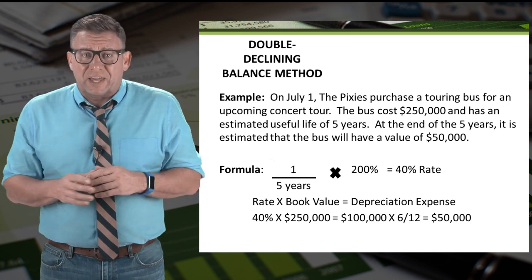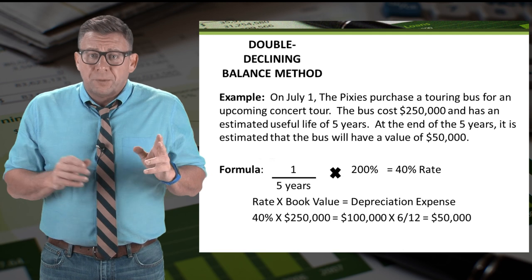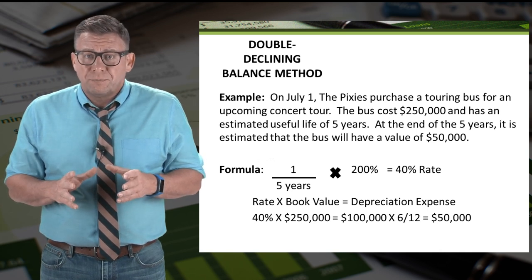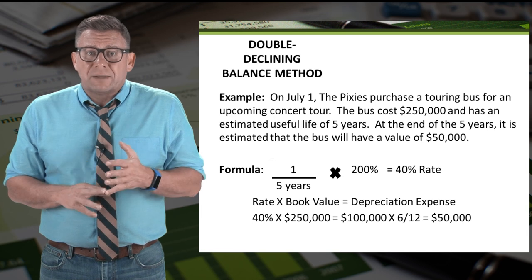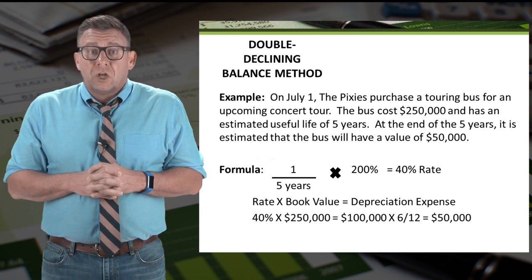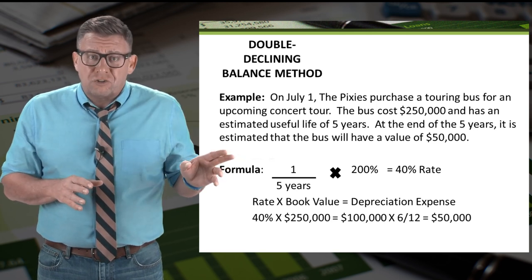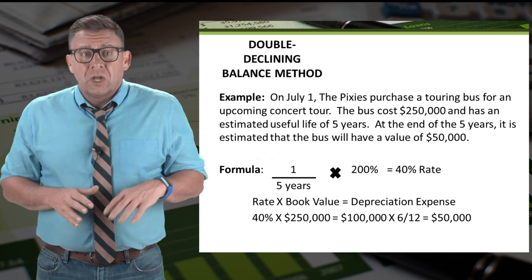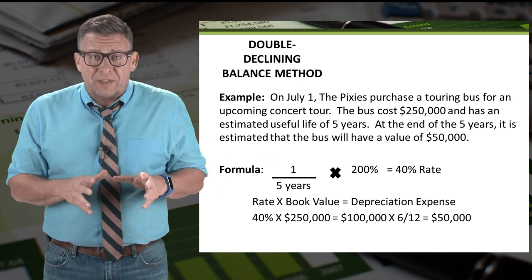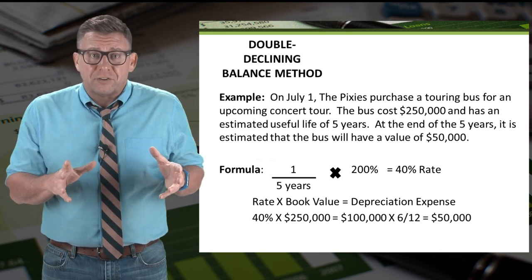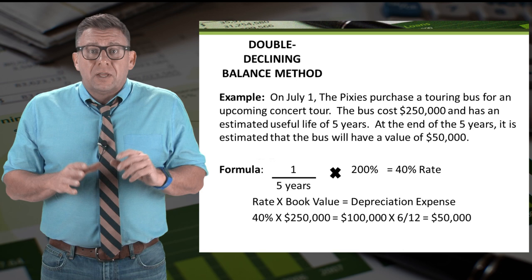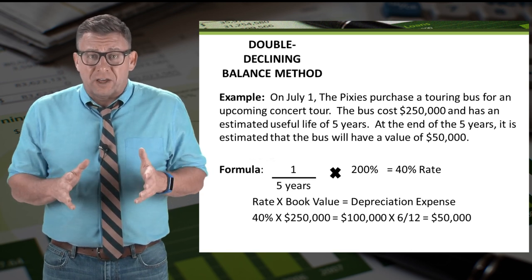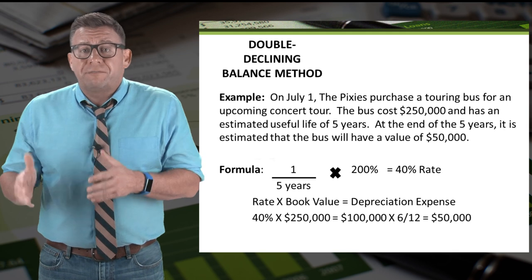Let's look at our previous example, but change the acquisition date. On July 1, the Pixies purchased a touring bus for an upcoming tour. The bus costs $250,000 and has an estimated useful life of five years, with an estimated residual value of $50,000 at the end of five years. Using the double declining balance method, we get a depreciation rate of 40%. This rate doesn't change based on when the asset was acquired. So 40% times the book value of $250,000 gives an annual depreciation of $100,000. However, the Pixies didn't have the bus for a full year — they had it for half a year. So we multiply $100,000 by 6/12 to get $50,000 for year one.